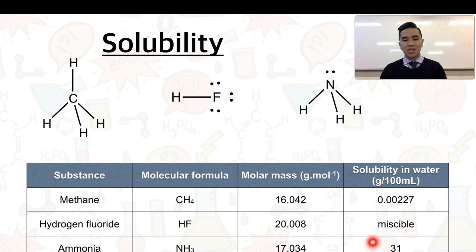We can see methane has a solubility of 0.00227 grams per 100 mils, which isn't very much. The next best is ammonia, which is at 31 grams per 100 mil. And what's quite interesting is that hydrogen fluoride is completely miscible. That means we can add as much of this hydrogen fluoride as possible and it will completely dissolve in water.